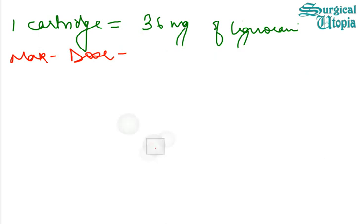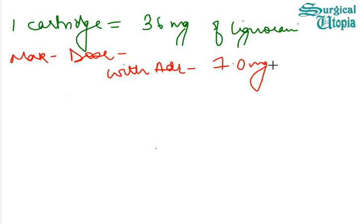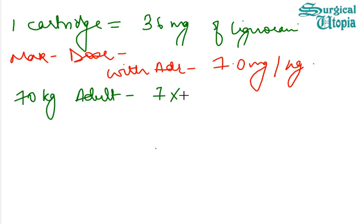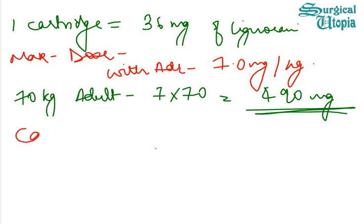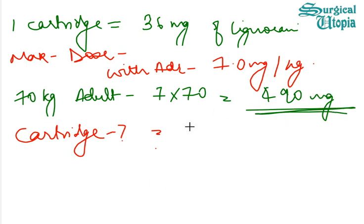In cases with adrenaline, 7.0 mg can be administered per kg, so for a 70 kg adult we can give 7 multiplied by 70, which is 490 mg. The number of cartridges that can be used — since one cartridge has 36 mg of lignocaine — means 490 mg of lignocaine will require 13.6 cartridges.